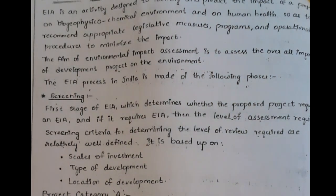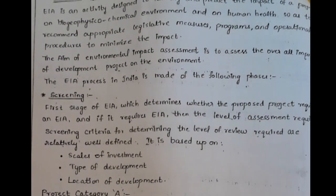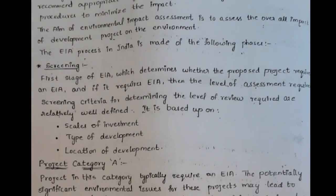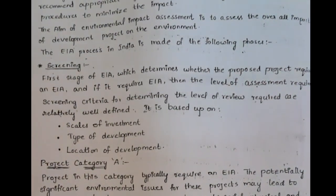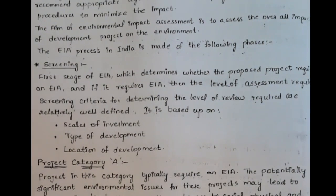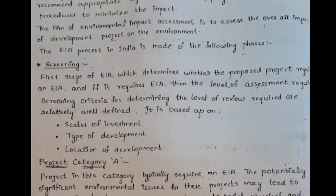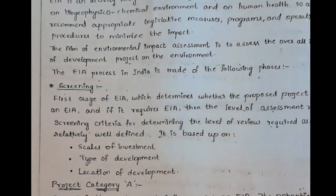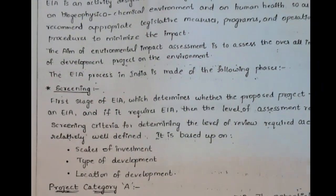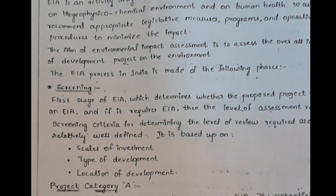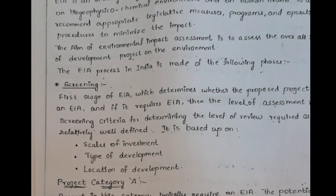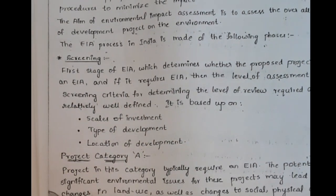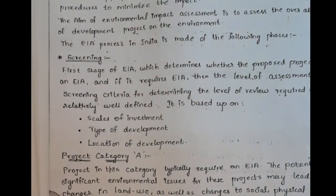Therefore, environmental impact assessment is very much necessary for category A projects. The only difference between project category A and project category B is the scale of investment. Large power plants fall under category A. Category A projects have a large scale of investment, while category B is for medium-level projects. Category B projects are not located in environmentally sensitive areas.